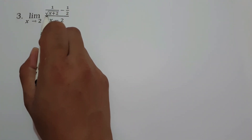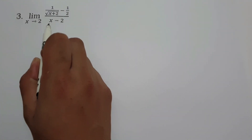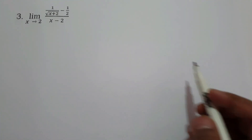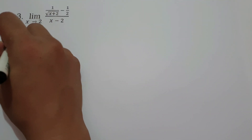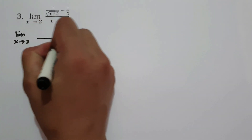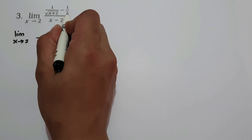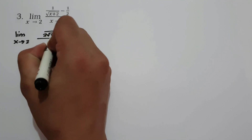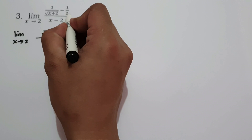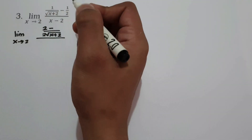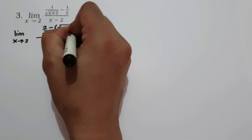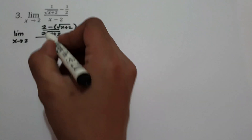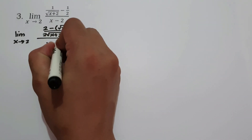On our last example, what is the limit of 1 over square root of x plus 2 minus 1 half, all over x minus 2, as x approaches 2? To simplify the given expression, let us have limit as x approaches 2. Let us find the LCM of 2 and square root of x plus 2. Let's multiply 2 times 1, that is 2, minus negative 1 multiplied by the square root of x plus 2, and let us write x minus 2 on the denominator.